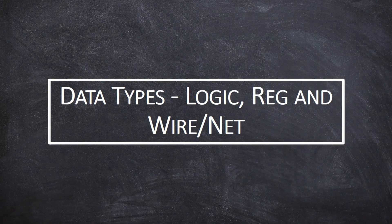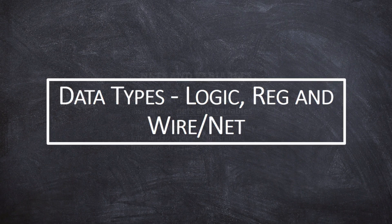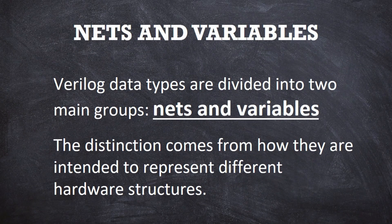For most of the interview questions, we will see what is the difference between logic, reg and wire. So let's see what is the difference between logic and wire. First, the nets and variables. There are two different types of data types: nets and variables. These two groups represent different hardware structures.